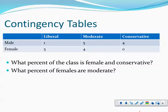Devin, tell me: what percent of the class is female and conservative? Zero percent. And we know that from... careful — this one's not out of the nine. Out of the 19, because it's female and conservative, we're looking at total, so that's zero over 19.